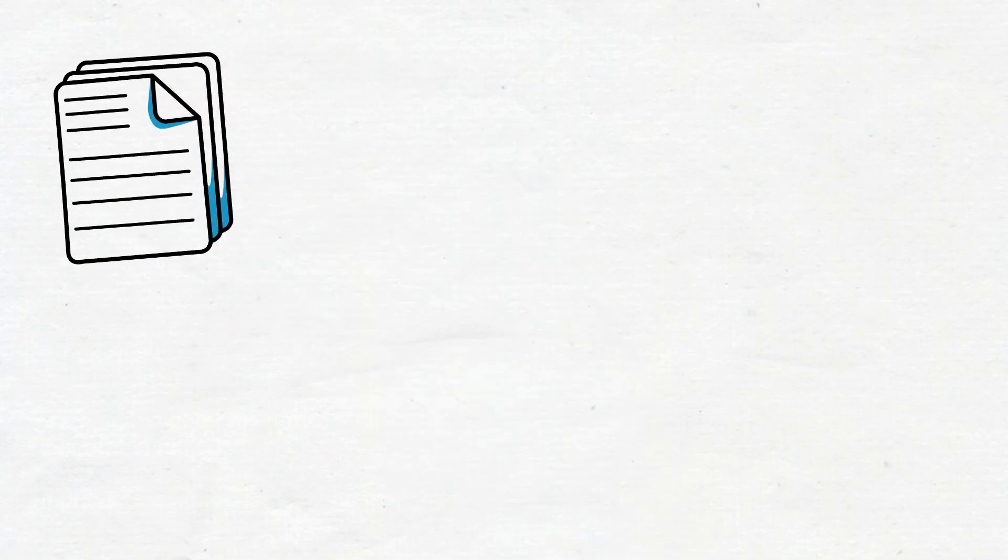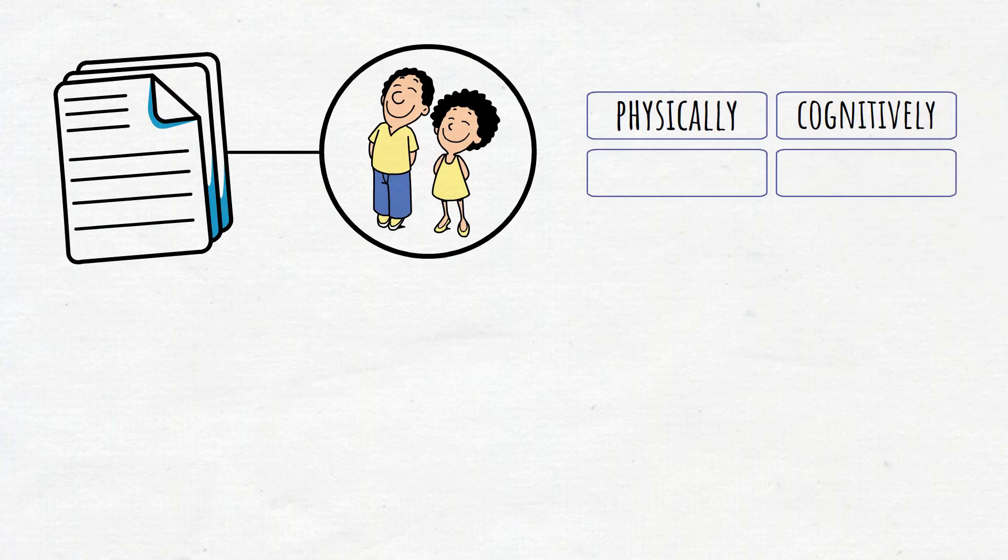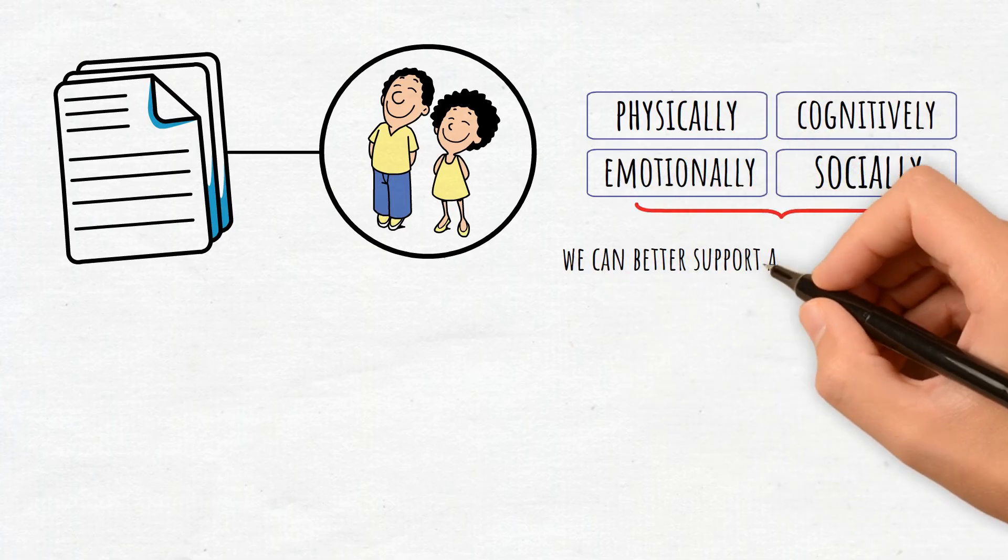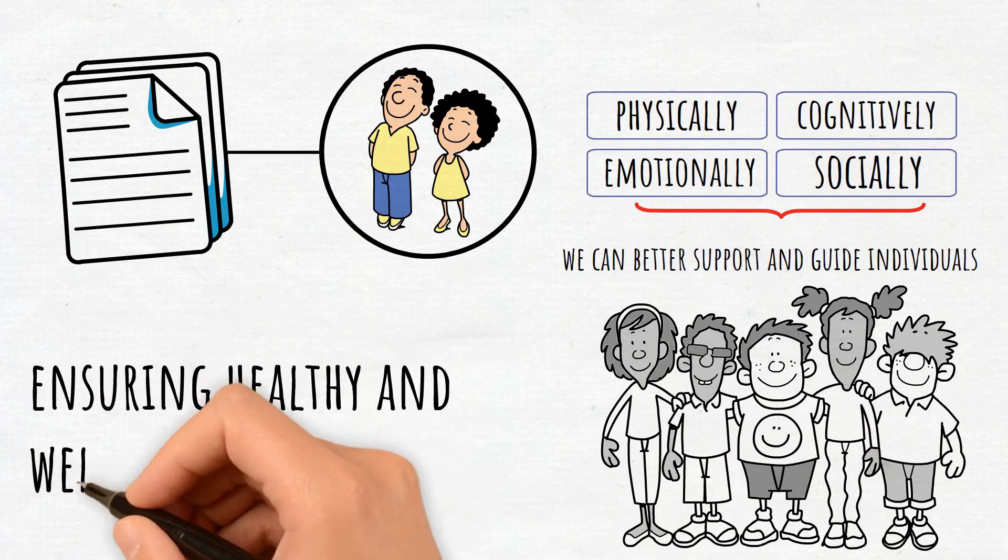These concepts provide a framework for understanding how children develop physically, cognitively, emotionally, and socially. By recognizing these factors, we can better support and guide individuals through each critical stage of growth, ensuring healthy and well-rounded development.